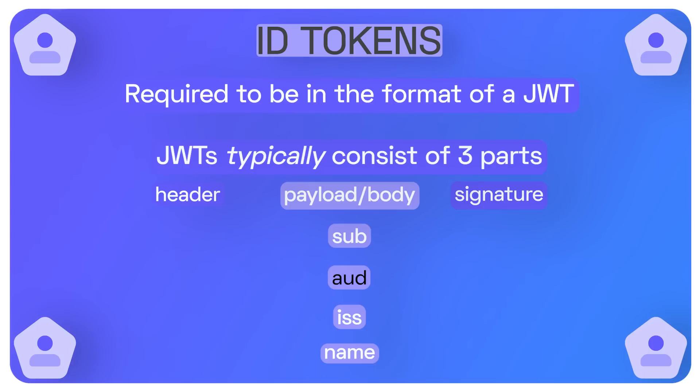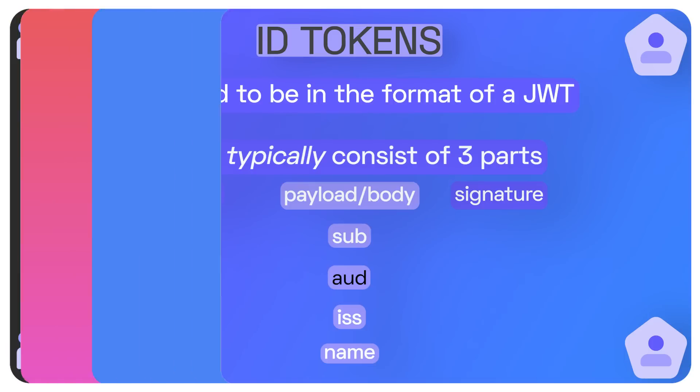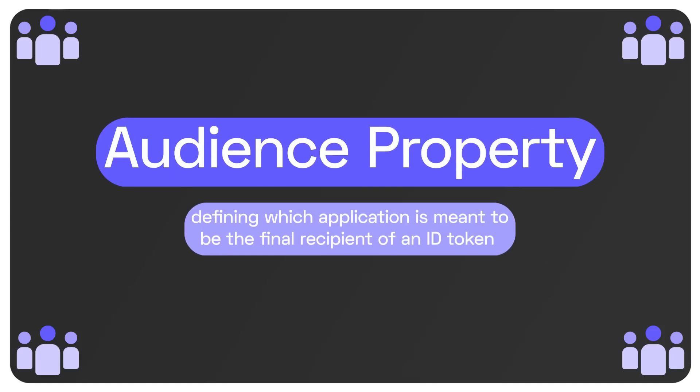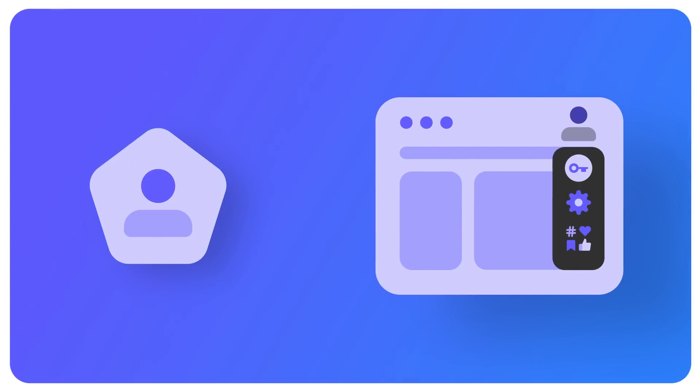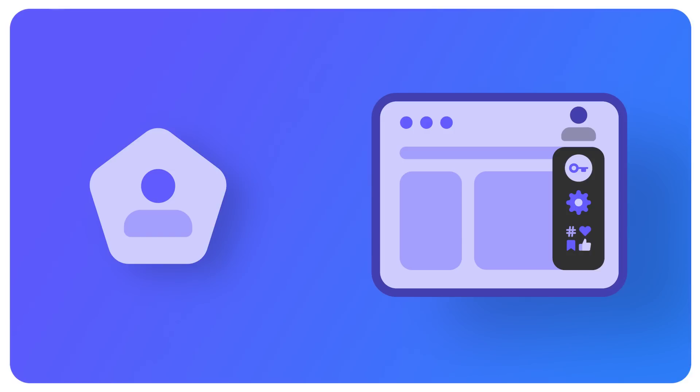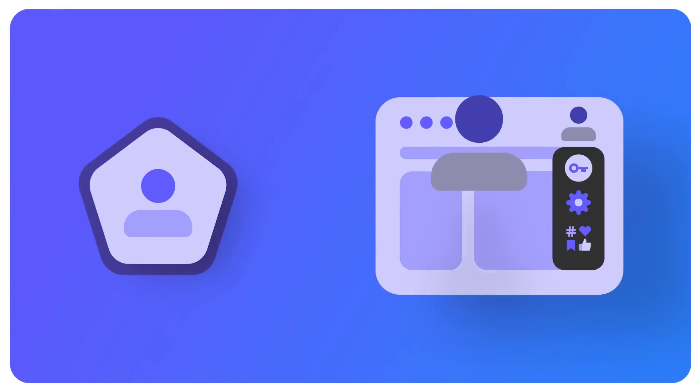The audience property is important for ID tokens. It defines which application is meant to be the final recipient of an ID token — in most cases, a client application. For example, inside an application you log in, get redirected back, and in the top right corner you might see your username and profile image. That ID token is being used to grab that information about the user, like their name and profile image. So the intended final recipient is the application the user is currently logged into, and the ID token is used to display their information on the app.